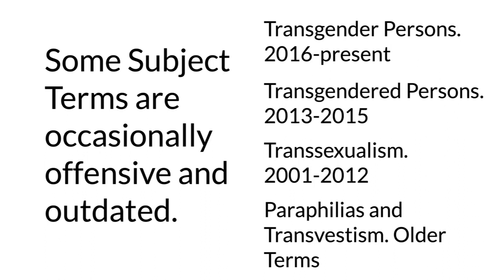You may run across some of these terms as you search through subject term systems. It's important to realize that this is the case, especially if you are doing research that includes historical topics — you may need to use older, potentially offensive terminology to find all the relevant articles. While subject systems try to adapt, it can be a slow-moving process. Librarians and catalogers continue to advocate for more inclusionary subject terms, but there are still many relics from earlier times in databases and catalogs.